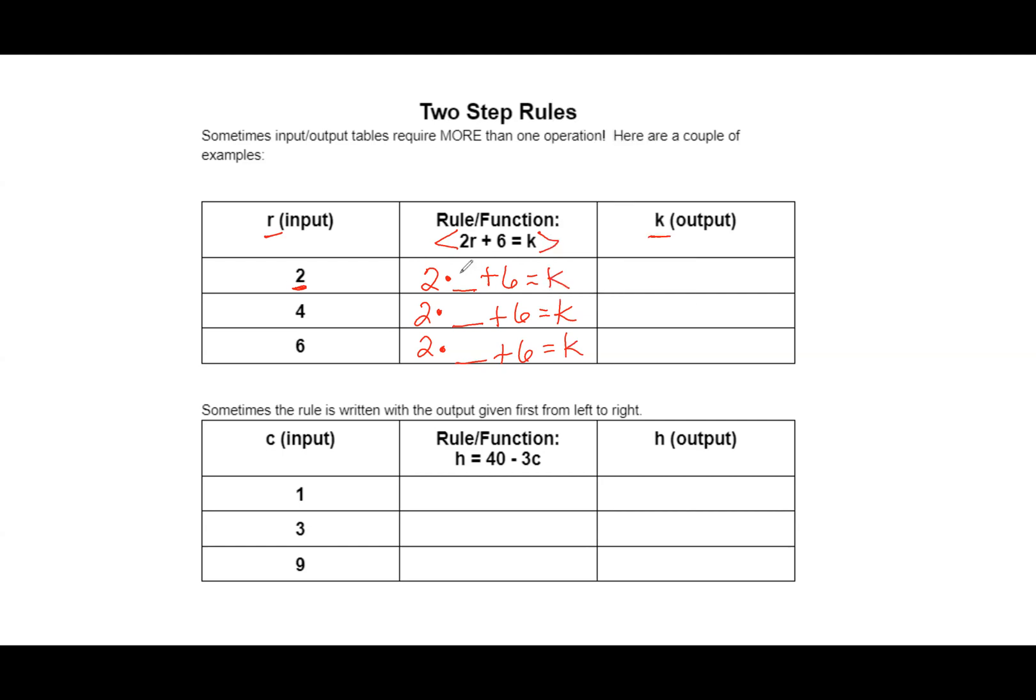In the first one, R is 2. In the second one, R equals 4. And in the third one, R equals 6. Now we're just ready to solve. Remember, in order of operations, we always do multiplication before we add or subtract. So we're going to do 2 times 2 first. We're going to get 4. 4 plus 6 equals 10. So that means our K equals 10 on this one.